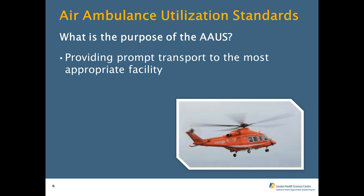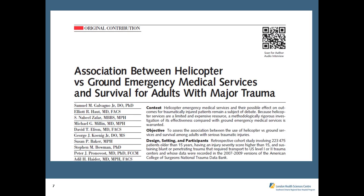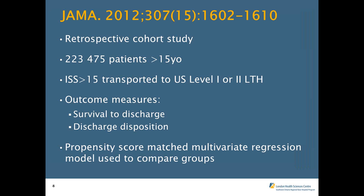There is evidence supporting using an air ambulance program. An article in JAMA showed an association between helicopter versus ground EMS and survival for adults with major trauma — 223,000 patients, a retrospective trauma registry review. ISS greater than 15, transported to U.S. Level 1 or Level 2 trauma hospitals. They used outcome measures of survival and discharge. A technique called propensity score matched multivariate regression models was used to compare groups — which our epidemiology colleagues confirmed is a fairly sound methodology, which fits why it's published where it is.